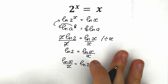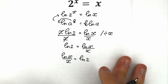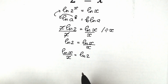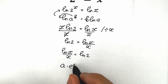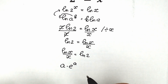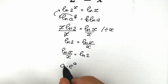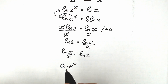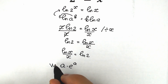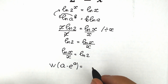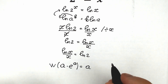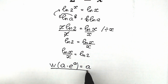Right now we need to remember the thing which is called the Lambert W function. If you have an expression like a times e to the power a — where a is the same expression in both places — and you apply the Lambert W function to this expression, as a result you get only a. That is what the Lambert W function does.